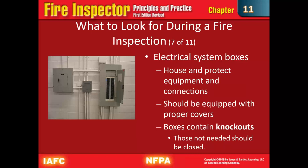Boxes contain knockouts — the little disks around the inside of the breaker box. In older construction you may see some that have been knocked out for wiring that was later removed, or where an electrician knocked out the wrong one. Make sure those are enclosed — there are little plugs that can be put in there if a knockout was removed and not needed. Anything that's not supposed to be in that breaker box needs to be kept out.